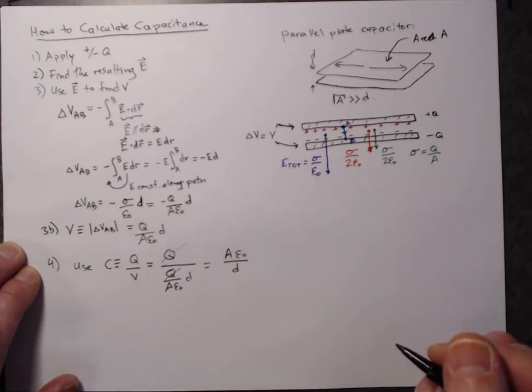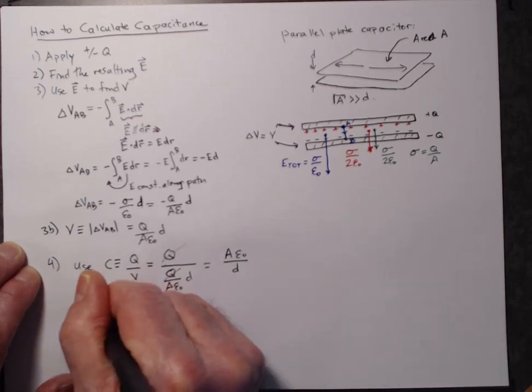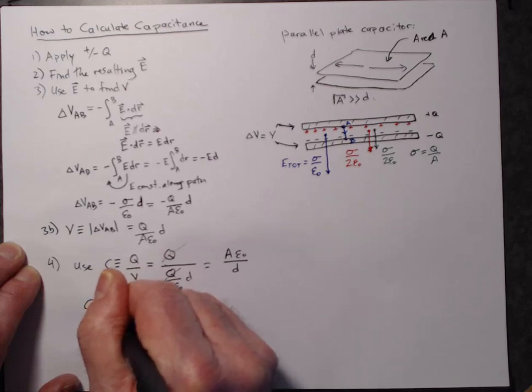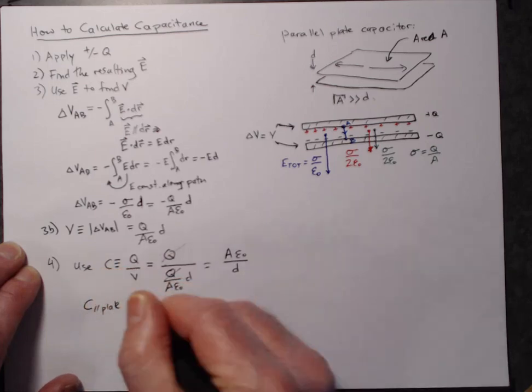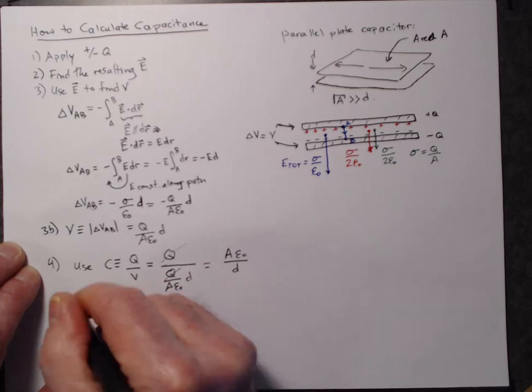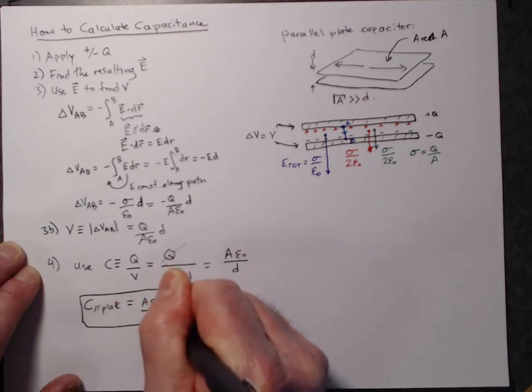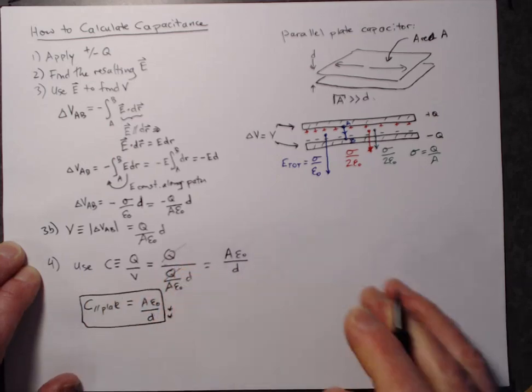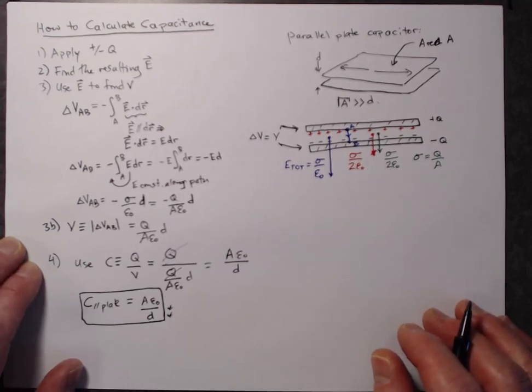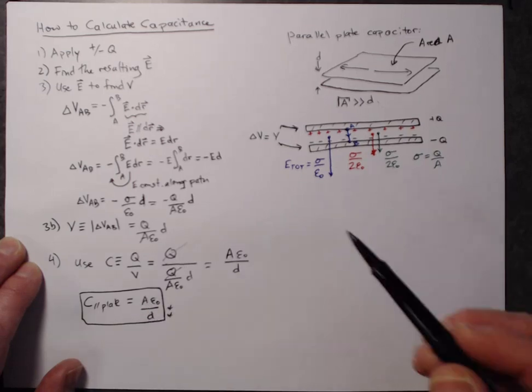So that's actually an important result in its own right, that the capacitance of a parallel plate capacitor is equal to A epsilon naught divided by D. That's such an important equation that we'll go ahead and give that two stars. We can see from this that you can make a large capacitance. You can get a large capacitance either by making the area large or by making the separation between the plates small.